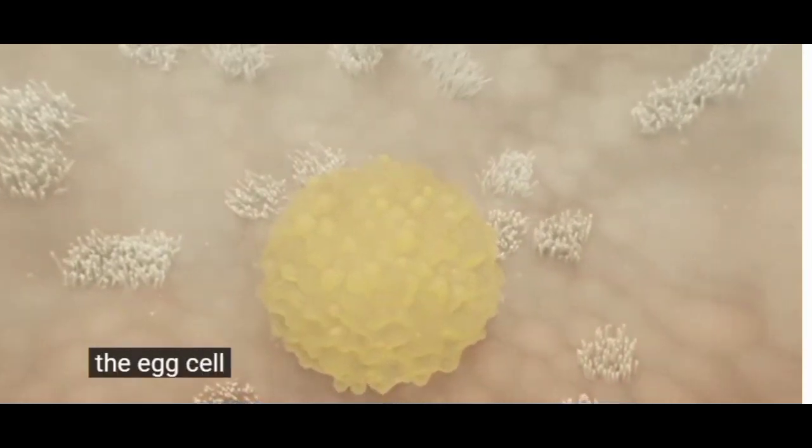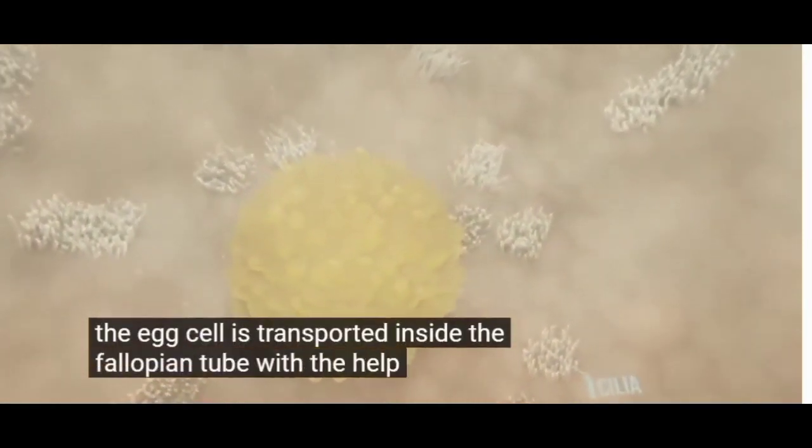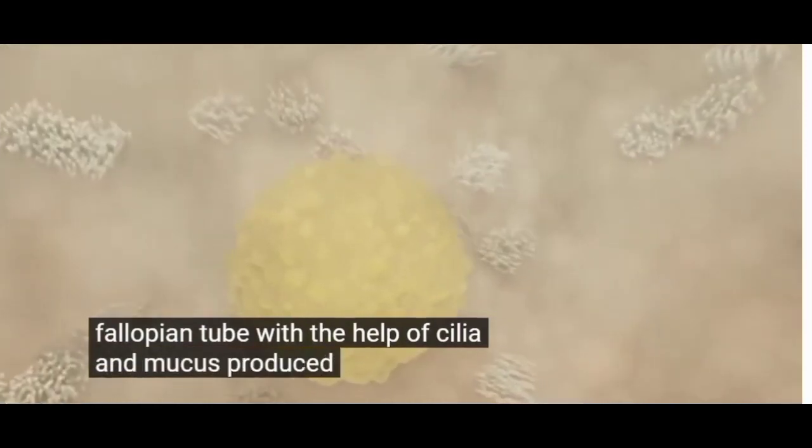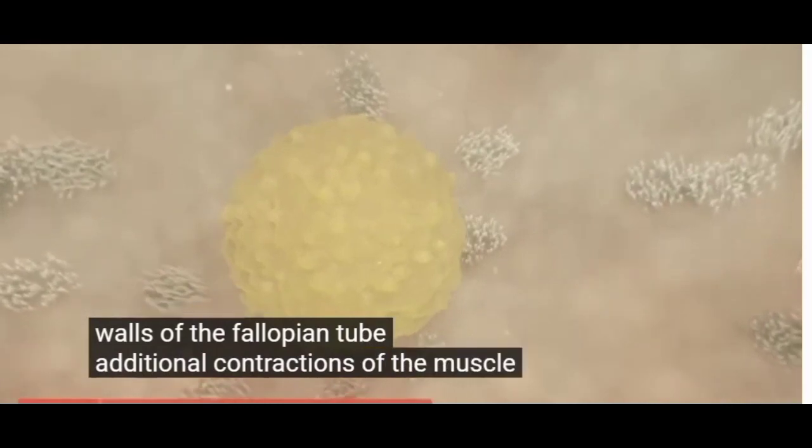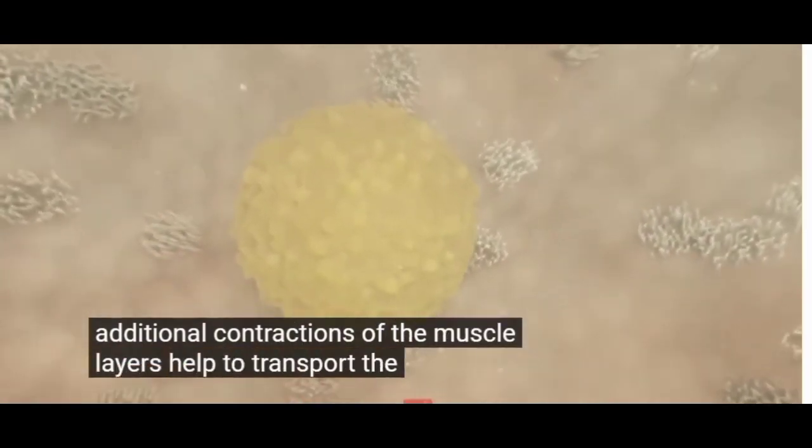The egg cell is transported inside the fallopian tube with the help of cilia and mucus produced by glands in the walls of the fallopian tube. Additional contractions of the muscle layers help to transport the ovum.